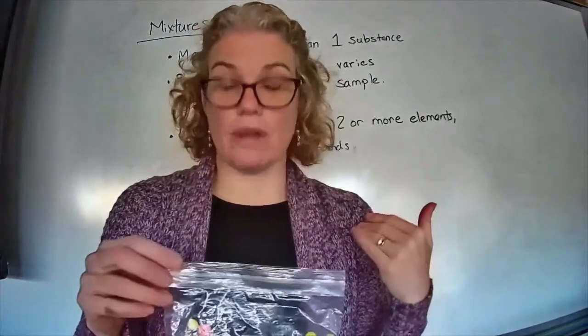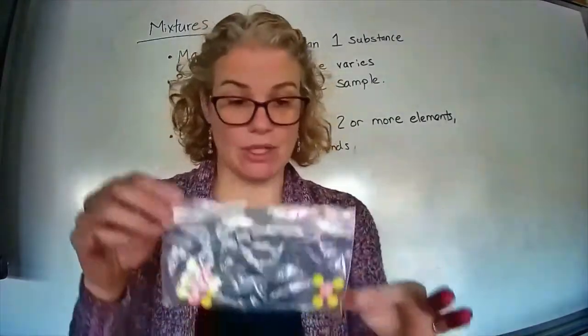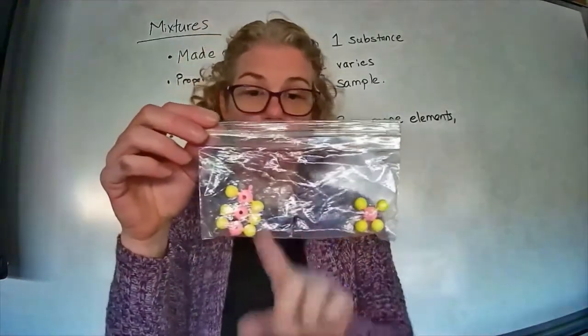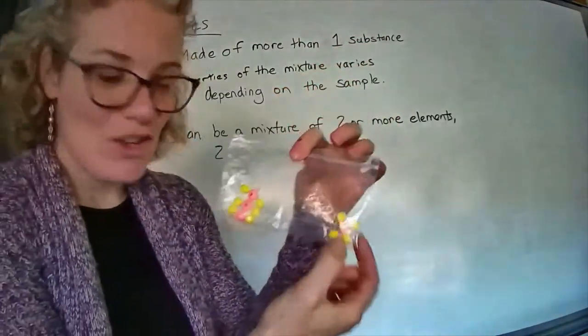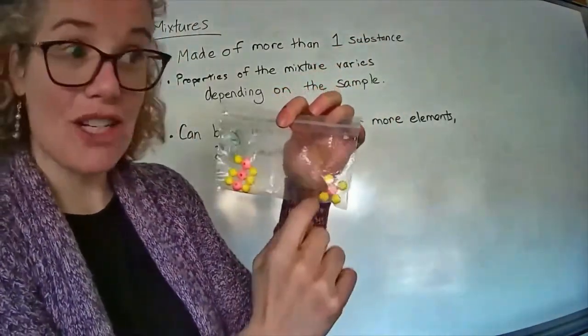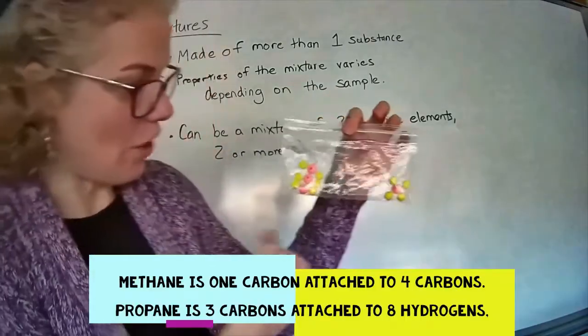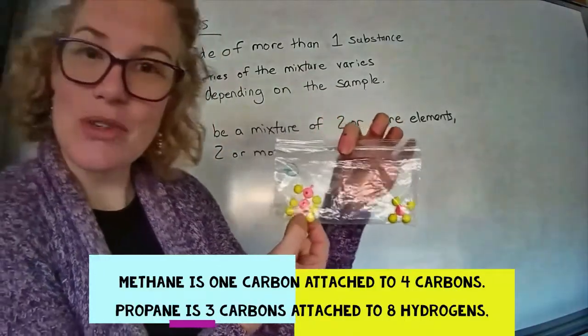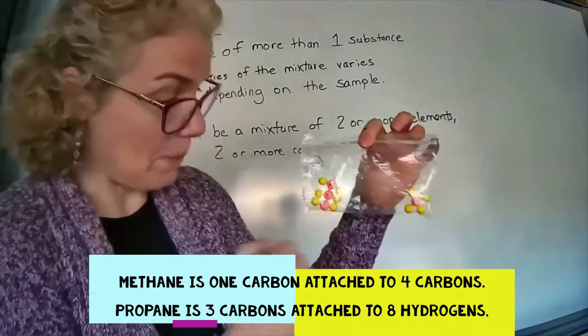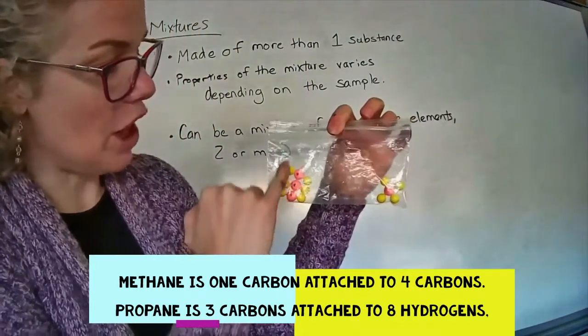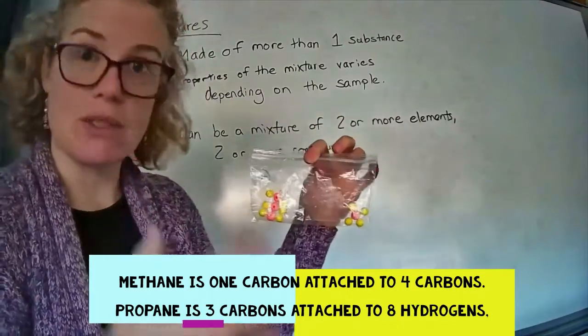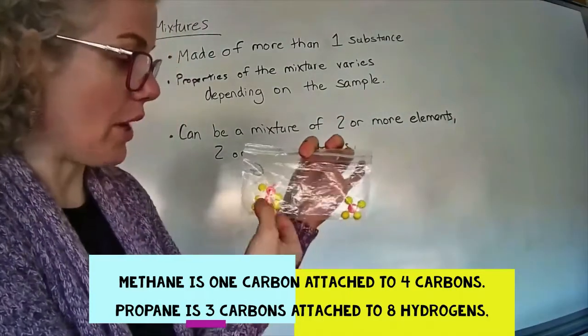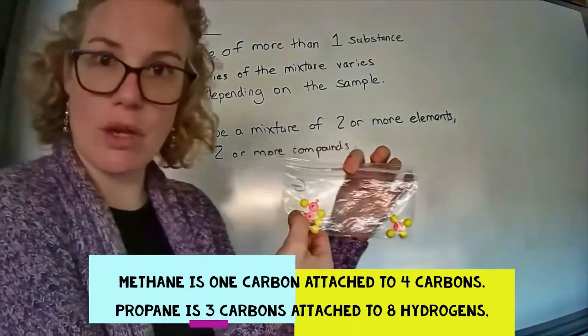We could also have a mixture of more than one compound. Here I have two compounds. I've made these to represent, this would be methane, so this is carbon and four hydrogens, which is what's in farts. And this is propane, so this would be what's in your grill that we burn. That's three carbons and six hydrogens. They've got very different properties, as a result they're different substances. You could have a mixture of those two gases.